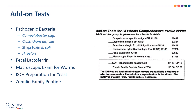The report can also include pages of add-ons, which can be selected on the requisition form at the time the test is ordered. Pathogenic bacteria should be added on if the patient's clinical picture is suggestive of infection. With H. pylori, this would include burning pain in the abdomen, nausea, and other symptoms, whereas with the other three bacteria listed, you would expect to see profuse diarrhea and an acute onset.